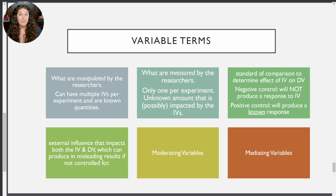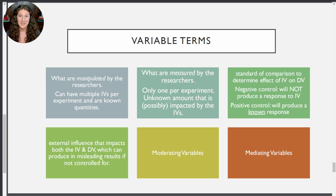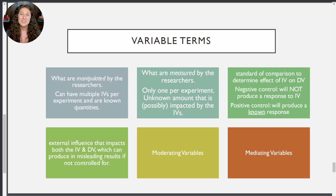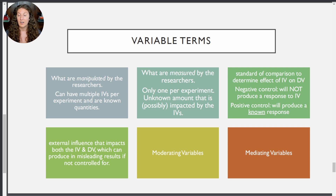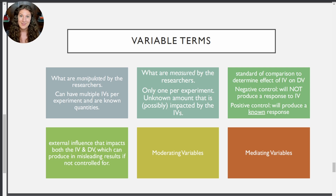Next up are two rarer types of variables. A moderating variable doesn't completely change the relationship, but may change the strength or even the direction of the relationship if it's present. For example, in our caffeine versus academic performance study, suppose we found that caffeine did help with academic performance, but it was especially true for graduate students. So the moderating variable — level of education or age — influenced the strength of the relationship: more caffeine helped performance more if you were in a graduate program than an undergraduate program. These are usually good opportunities for future research studies to explore.